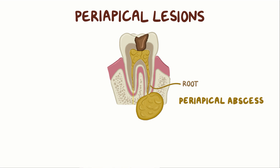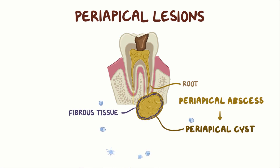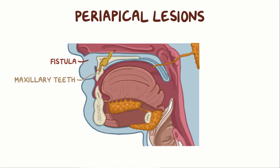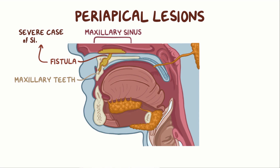The periapical abscess can also progress into a periapical cyst, which is when fibrous tissue and immune cells surround an area of chronic infection containing pus. In less fortunate cases of periapical lesions on the maxillary teeth, the cyst can form a fistula to the maxillary sinus, causing a severe case of sinusitis.